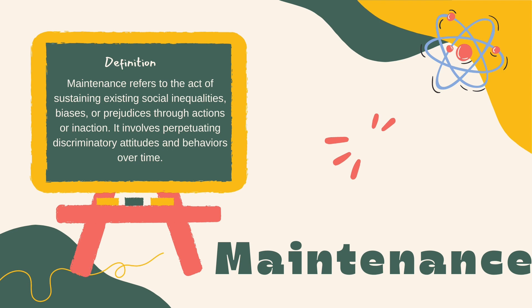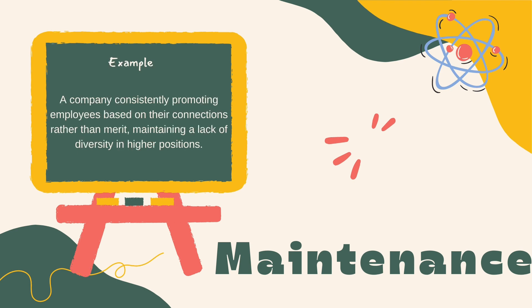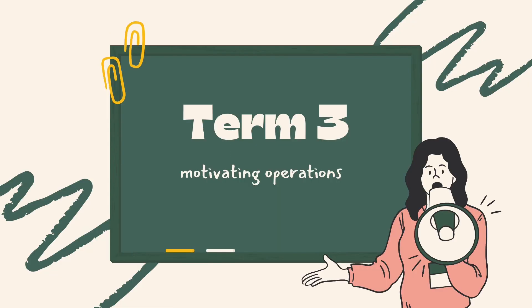Maintenance refers to the act of sustaining existing social inequalities, biases, or prejudices through actions or inaction. It involves perpetuating discriminatory attitudes and behaviors over time. Examples include a company consistently promoting employees based on connections rather than merit, maintaining a lack of diversity in higher positions, and individuals disregarding the needs and concerns of others, perpetuating discriminatory behaviors within their social circles.